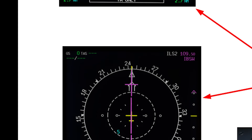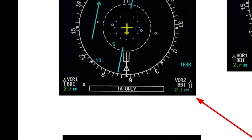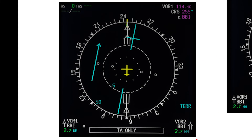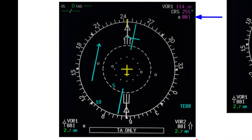Moving on, we have the rose VOR mode, which is similar to the ILS rose mode. Again it shows you the offset from a top-down view from the dialed-in VOR radial. In this case we are more than 10 degrees right of track. In the top right corner you have the frequency, the selected course, and the identifier showing up.